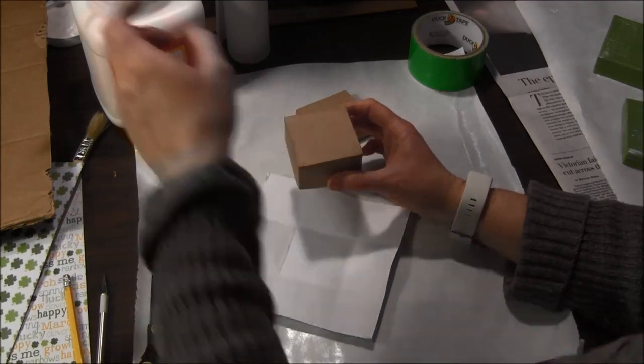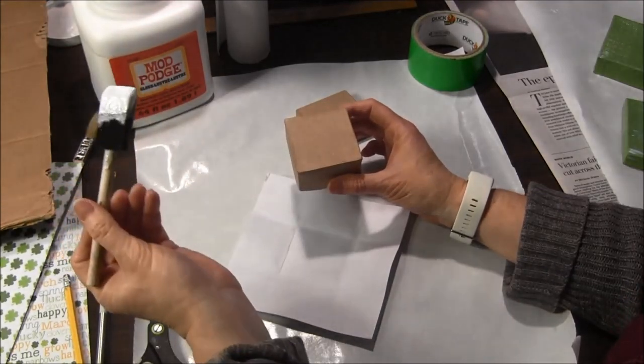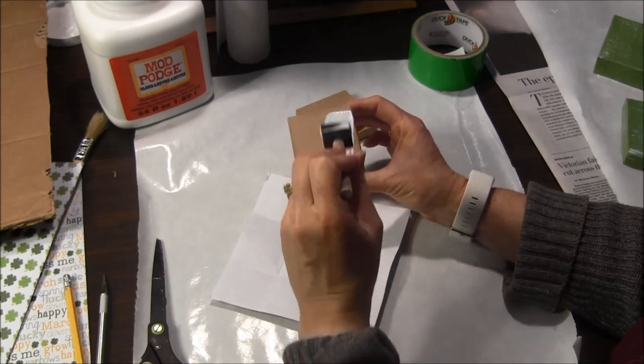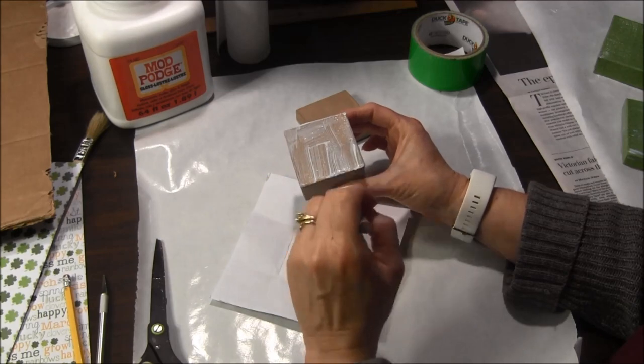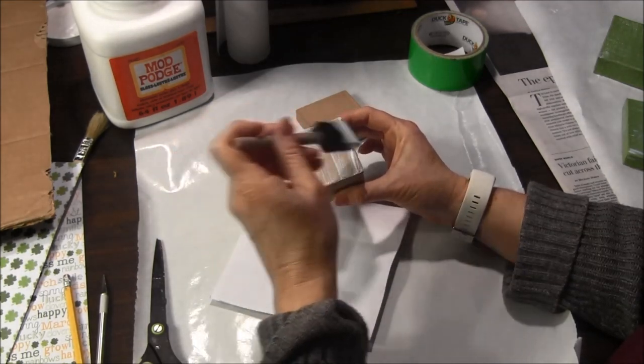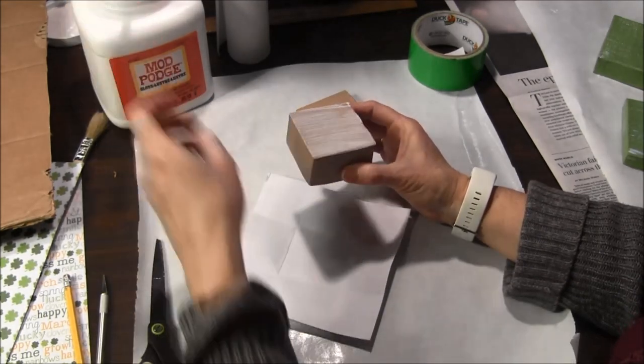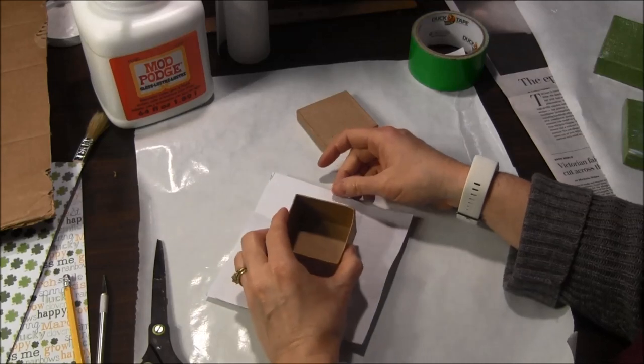Next I'm going to take some Mod Podge on my brush and just brush it on to the bottom of the box. Make sure you get a good coverage on the box and then I'm going to place the box down on the paper.